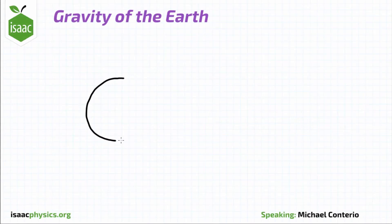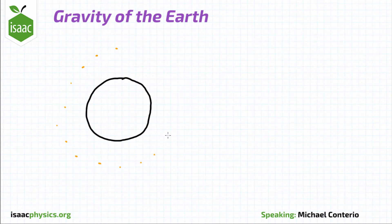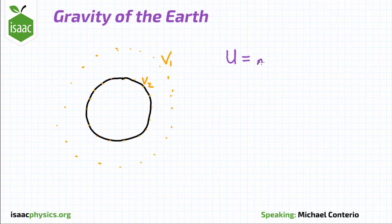In this diagram we see the Earth and two gravitational potentials at different locations: V1, some height above the Earth's surface, and V2 at the Earth's surface. The gravitational potential energy of a mass m at either of these points is given by the mass multiplied by the gravitational potential.